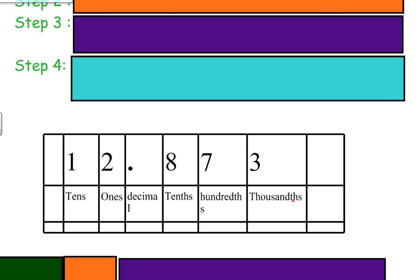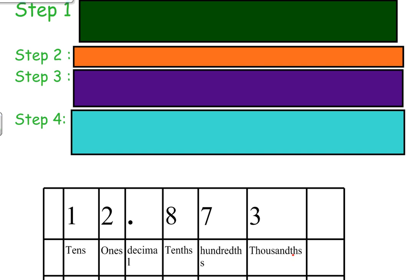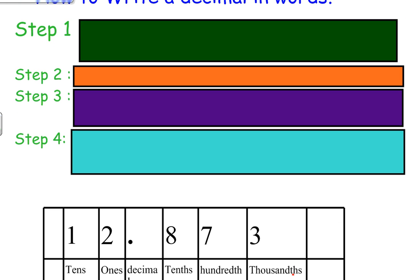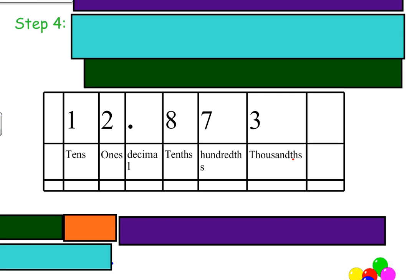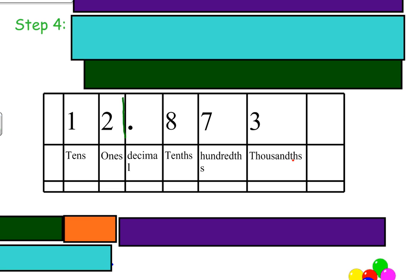Now follow right along. The first step that you must do is look at the number in front of the decimal and write it down in word form. So I'm simply looking at this number right here and I'm going to write it down in word form.